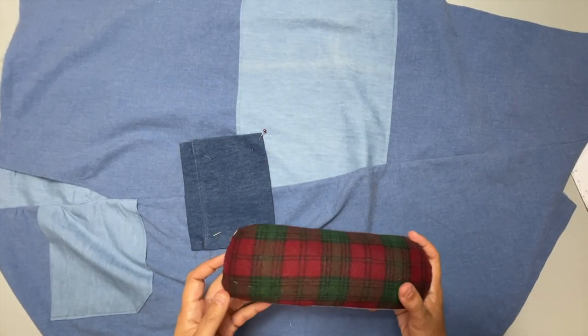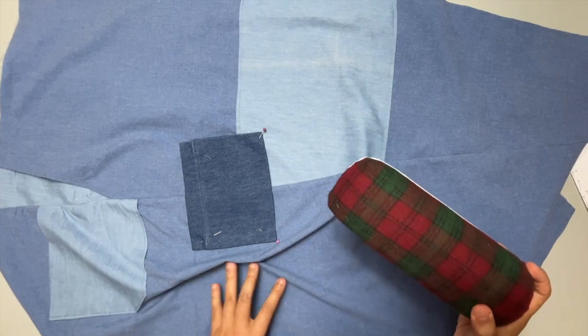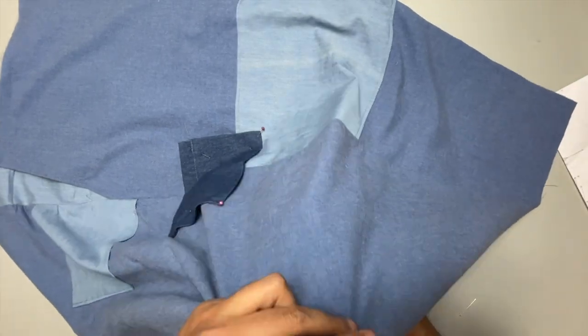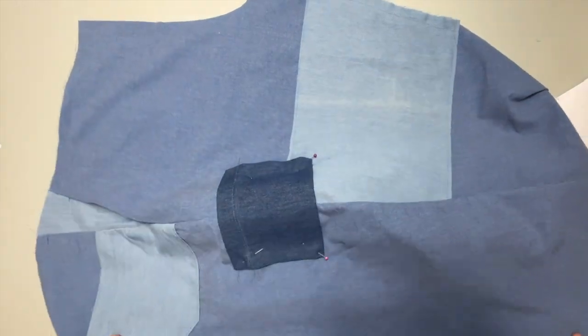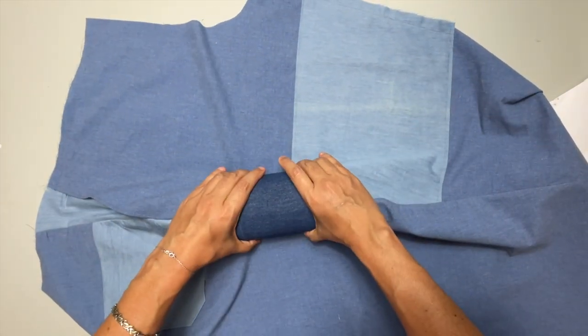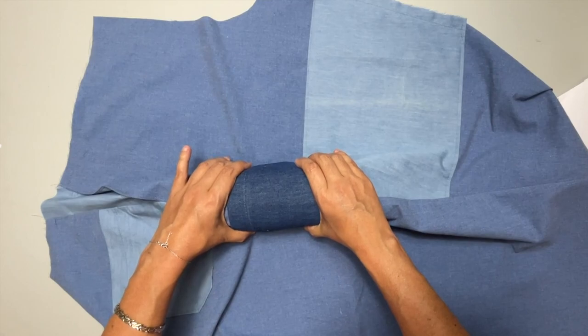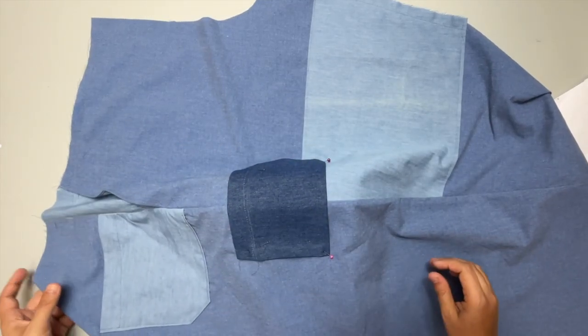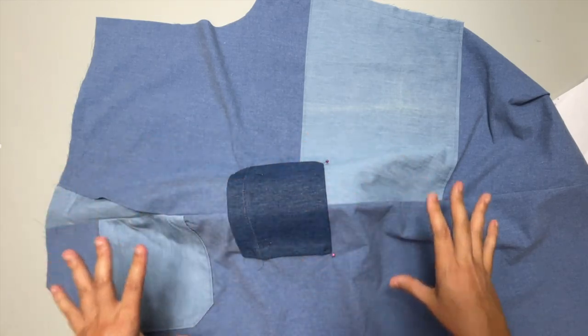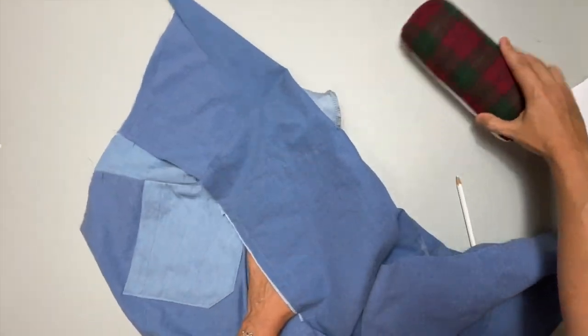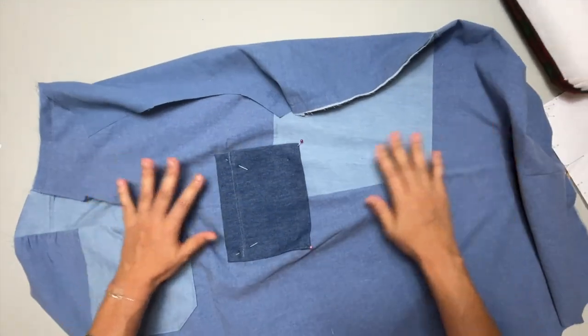For what it's worth, it might be worth it to grab a tailor's ham or just like a rolled up towel or something and kind of mimic the curve of the body. That way when you go, I mean, of course, your leg is not that small. But when you go to wear this so that it won't pucker or pull, it's not going to be perfectly flat.